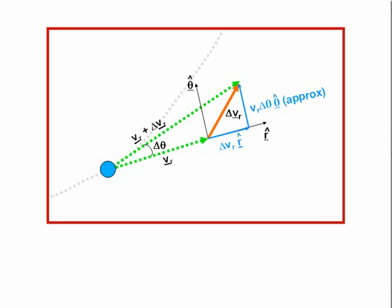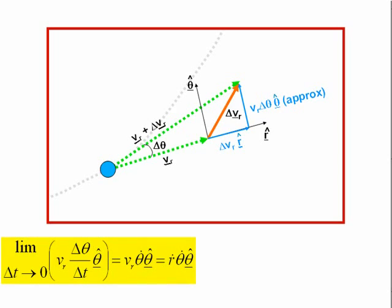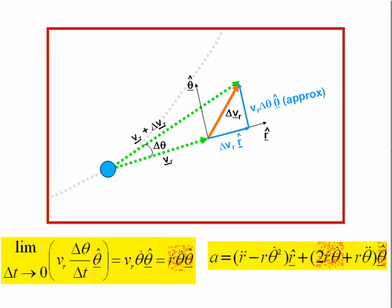The rate of change of the tangential component of the vector delta-vr is given by the limit as delta-t tends to 0 of vr delta-theta over delta-t times theta-hat, which equals vr theta-dot theta-hat, which equals r-dot theta-dot theta-hat. This is one half of the Coriolis acceleration term. Therefore, half of the Coriolis acceleration arises from the change in the direction of the radial velocity.